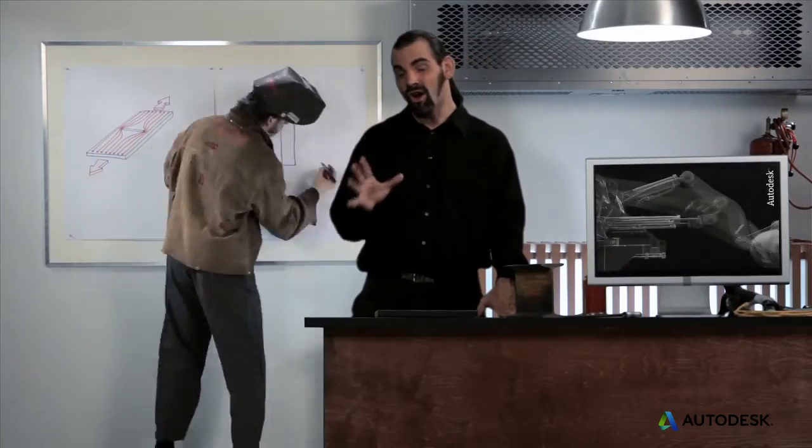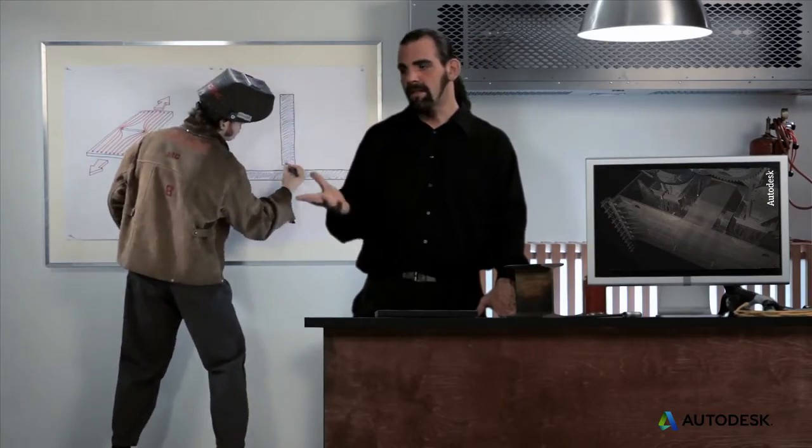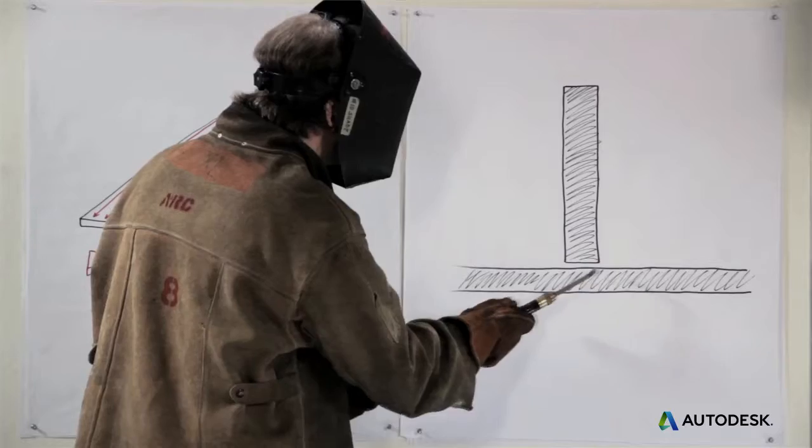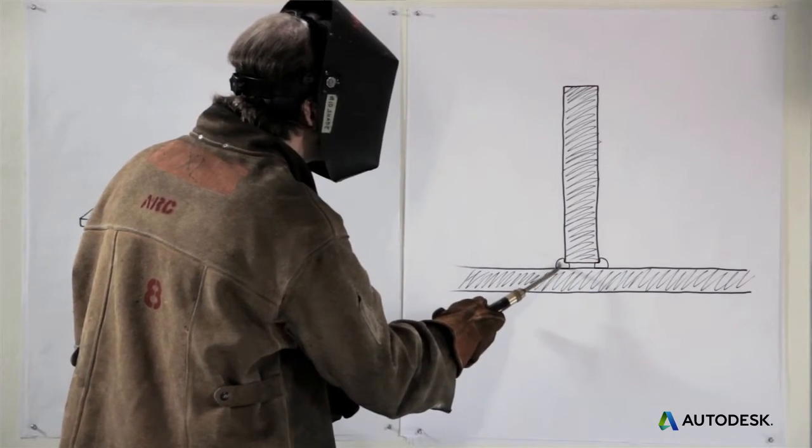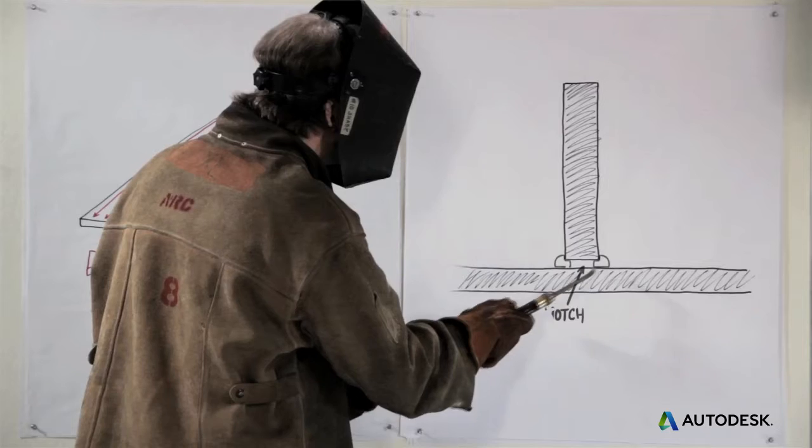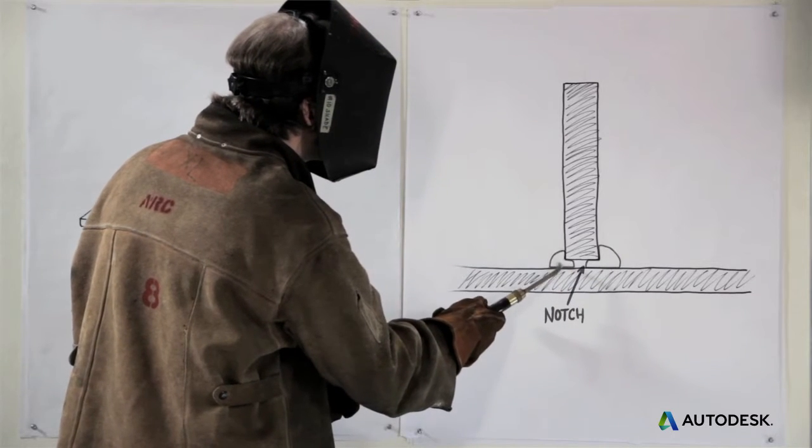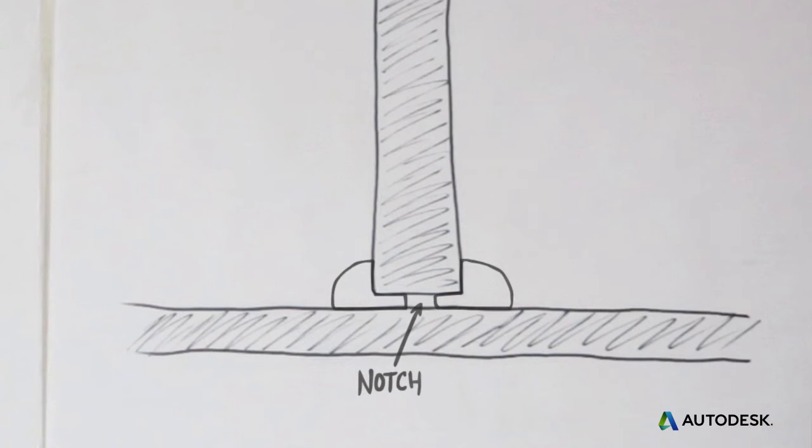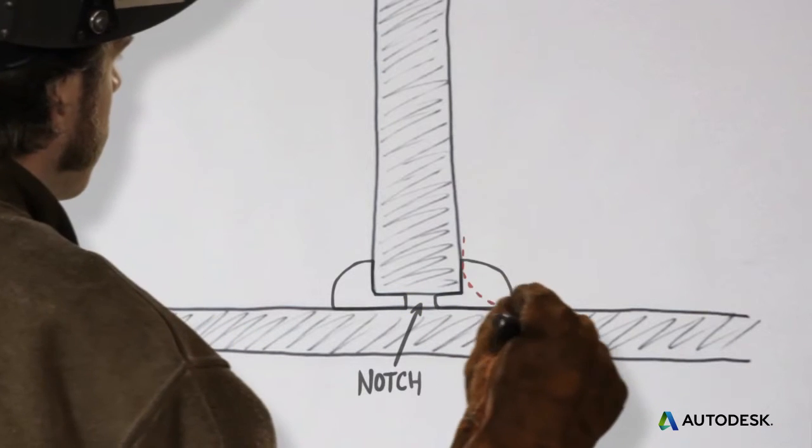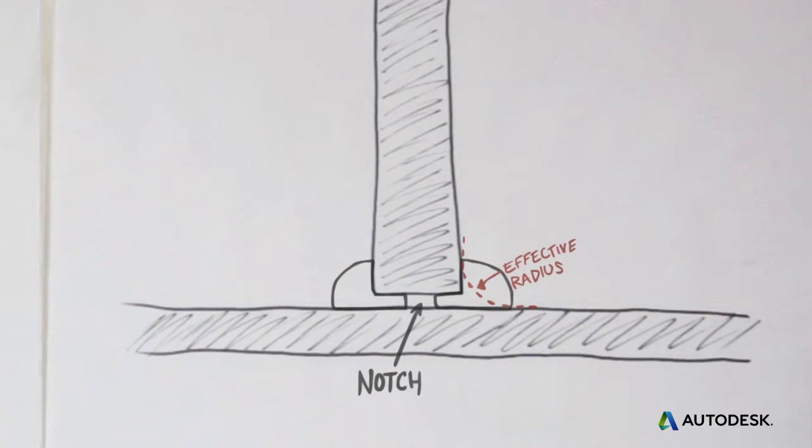Some manufacturing methods actually cause notches in a part, like welding plates. A weld joint that doesn't go all the way through the material is like having a notch cut out of it. A nice fat weld joint with deep penetration is better because it both decreases the size of the notch and it also increases the effective radius of the joint.